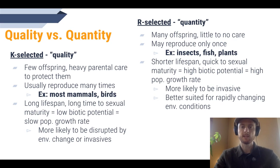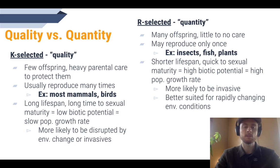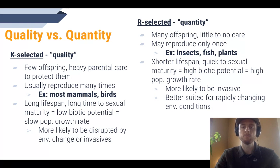K-selected species take the quality approach. They're typically larger, longer-lived animals like large mammals, and they only have a few offspring at a time, but they take really good care of them. Because they live longer, they take longer to reach sexual maturity, but they usually have the opportunity to reproduce many times over their lifespan. Since they only have a few offspring at a time, they invest a lot of energy in them — getting them food, keeping them warm, and even fighting off predators. Because of this, they have a lower biotic potential or maximum reproductive rate, which means slower population growth.